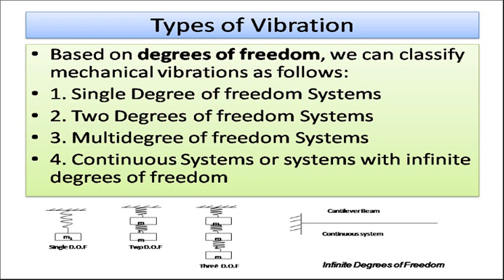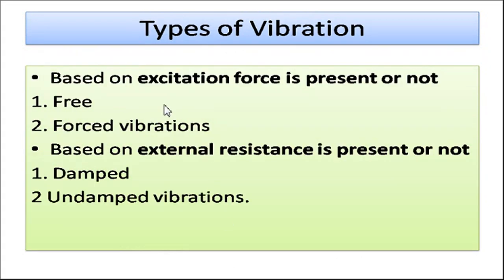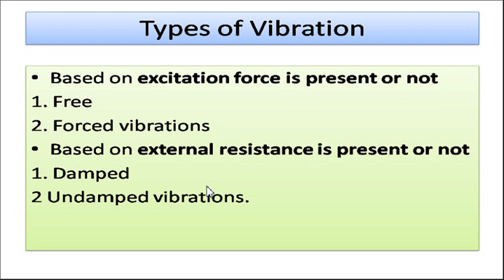The second classification is based on the excitation force. When no excitation force is present, it is called free vibration — for example, a simple pendulum with no continuously supplied external excitation. When an excitation force is present, it is called forced vibration, such as in an automobile where a diesel or petrol engine provides the excitation force. There is also a classification based on external resistance: if resistance is present it is called damped vibration; if there is no resistance it is called undamped vibration.